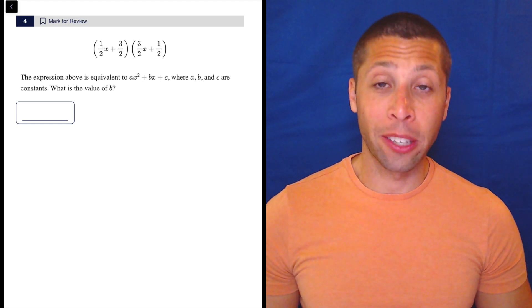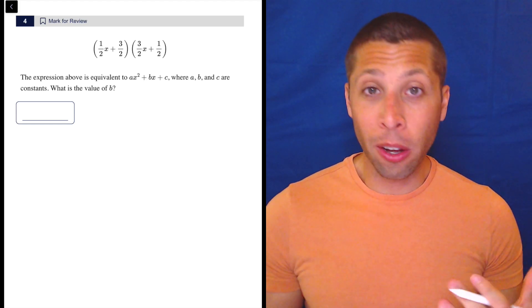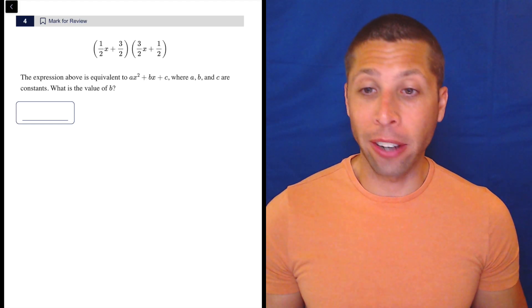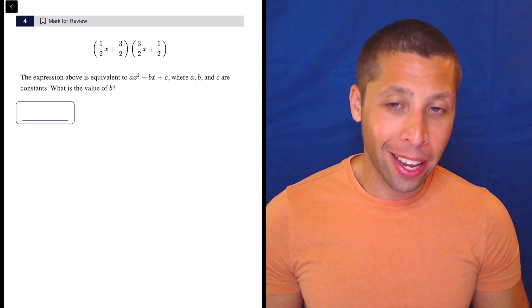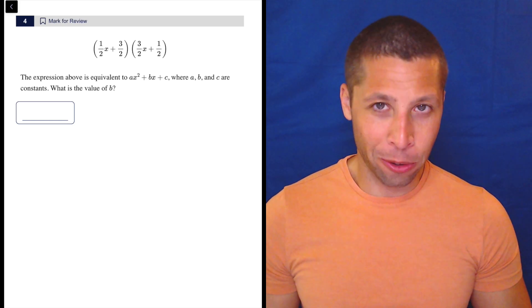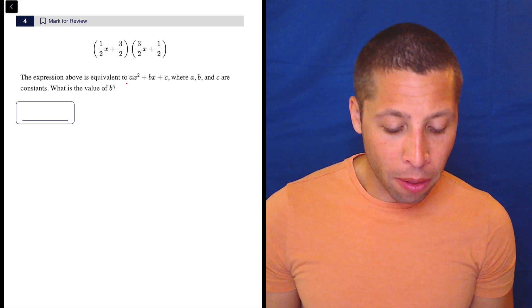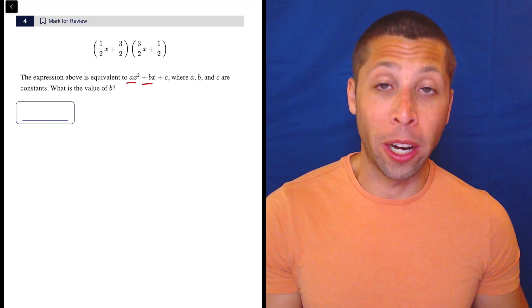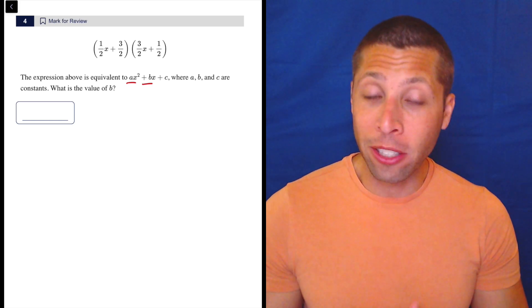My first instinct for a question like this would be to arithmetize because maybe I can get rid of the X and see what this equation looks like. But if I put X as zero, then I lose out on the A and B terms in the equation that I'm trying to build, and I need the B term.